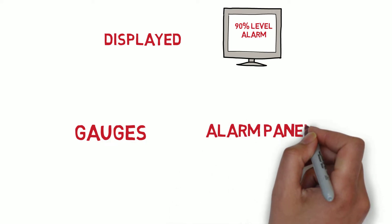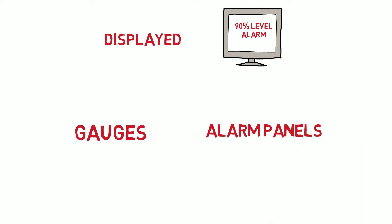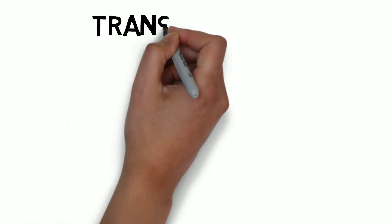This brings us on to the question of how we detect these process variables. Devices called transmitters do this job.